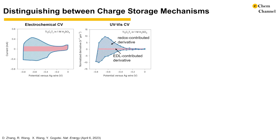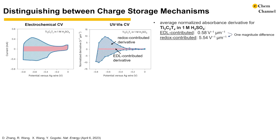Electrostatic double-layer formation can only lead to a negligible absorbance derivative. On the other hand, the UV-Vis absorbance derivative during an electrochemical reaction that involves faradaic charge transfer will be appreciable. As most materials go through potential ranges where the double-layer mechanism dominates the current, we can take the ratio between the absorbance derivative during the electrochemical reactions of interest and the absorbance derivative of the double-layer region to figure out the charge storage mechanism. Take Ti3C2 MXene in sulfuric acid for example: we label the double-layer contribution region as pink and the redox-contributed region as blue in the electrochemical CV.